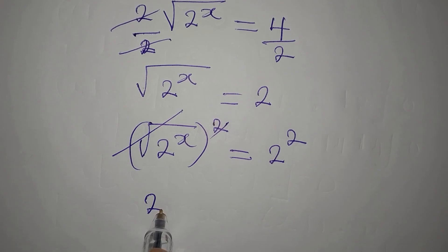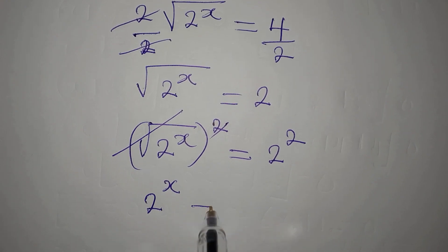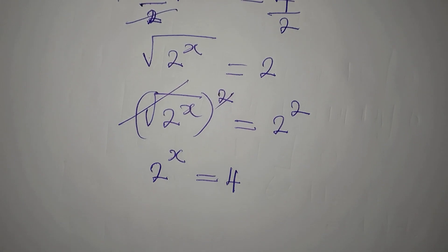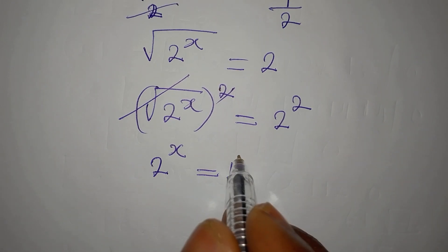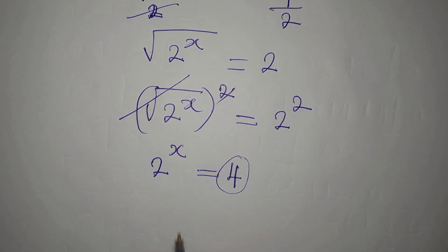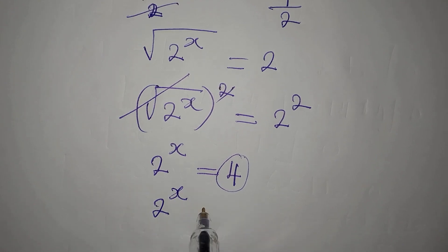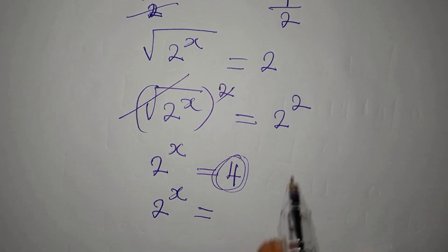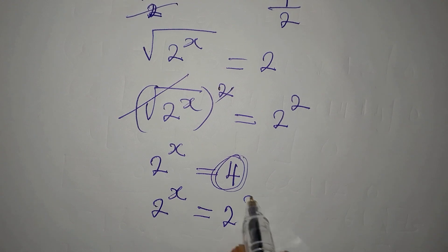We now have 2 to the power of x equals 4. Then if we go ahead now, we will make sure they have the same base. So we have 2 to the power of x, and this 4 will be the same thing as 2 to the power of 2.